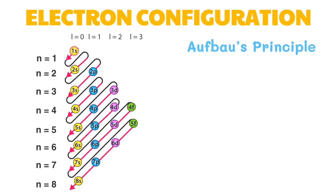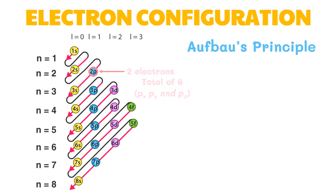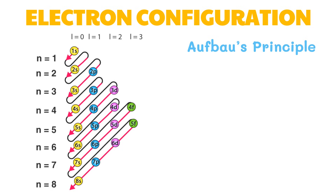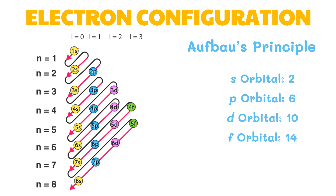The first orbital assigned two electrons is the 1s, followed by two electrons for 2s, and another two for each 2p orbital — with a total of six for p sub x, p sub y, and p sub z. This sequence continues until all the electrons in an atom have been assigned to orbitals. Note that the maximum number of electrons for the s orbital is 2, 6 for the p orbital, 10 for the d orbital, and 14 for the f orbital.